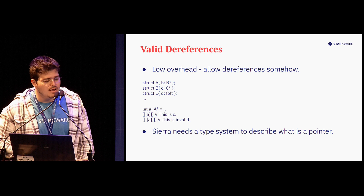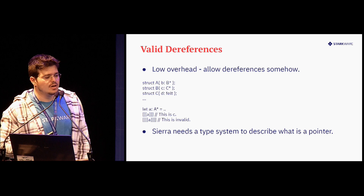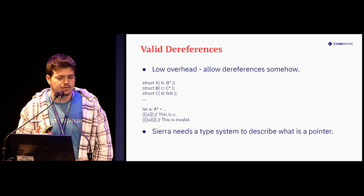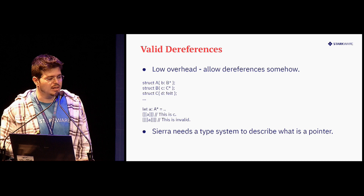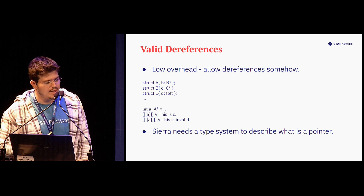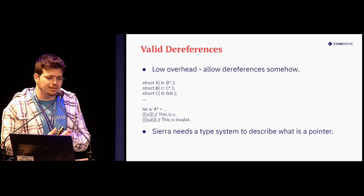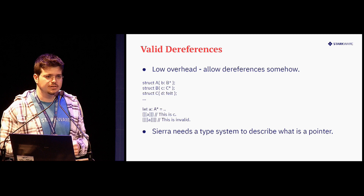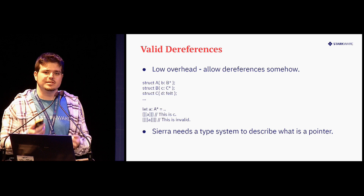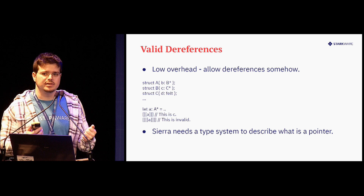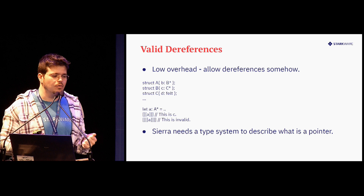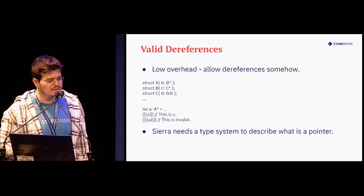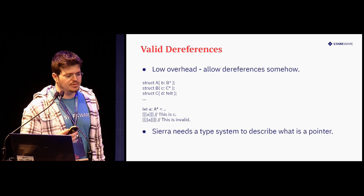Alright, so first of all, how can we solve invalid references to make them valid? We still want to enable low-level dereferences — not just simulate them in some other way, because that would have overhead and we want low overhead. So we want to allow dereferences somehow. Let's look at a simple example.